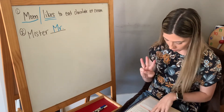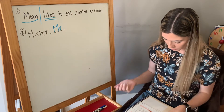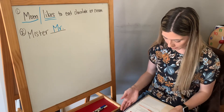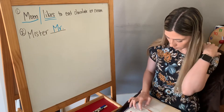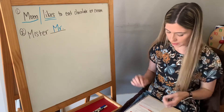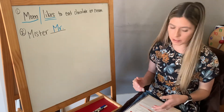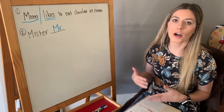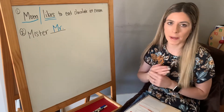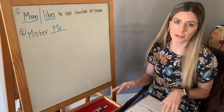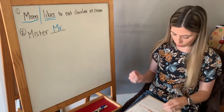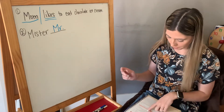Section three: read the sentences, circle the correct word to finish the sentence. All of these sentences have words that are homonyms. They sound the same, but they mean different things and they're spelled differently. So choose the correct one.